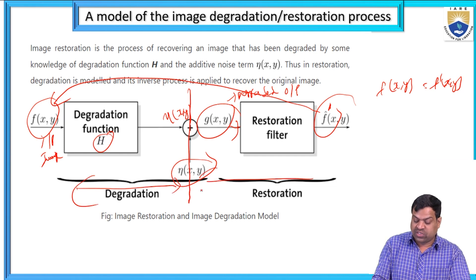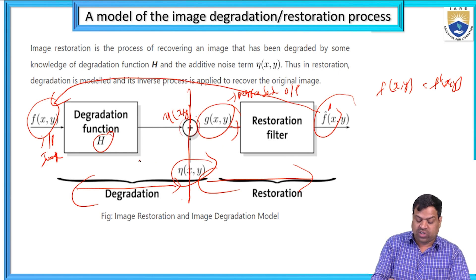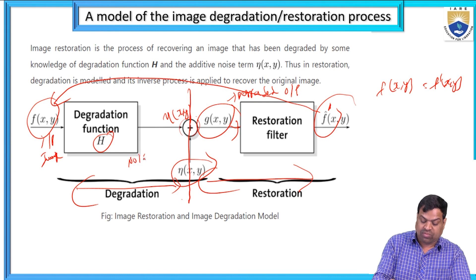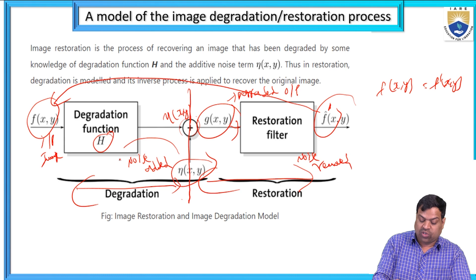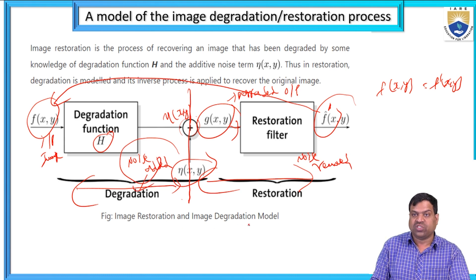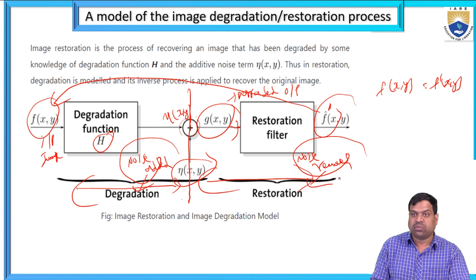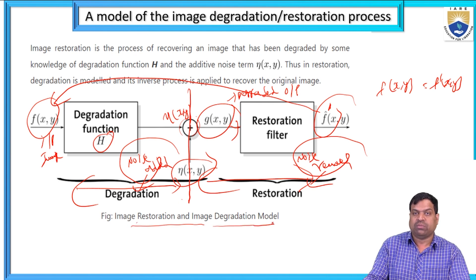First is degradation; second is restoration. Degradation is when noise is added. Restoration means after removing the noise. When noise is added, the degradation process occurs. When noise is removed, that is restoration. This is the image restoration and degradation model.